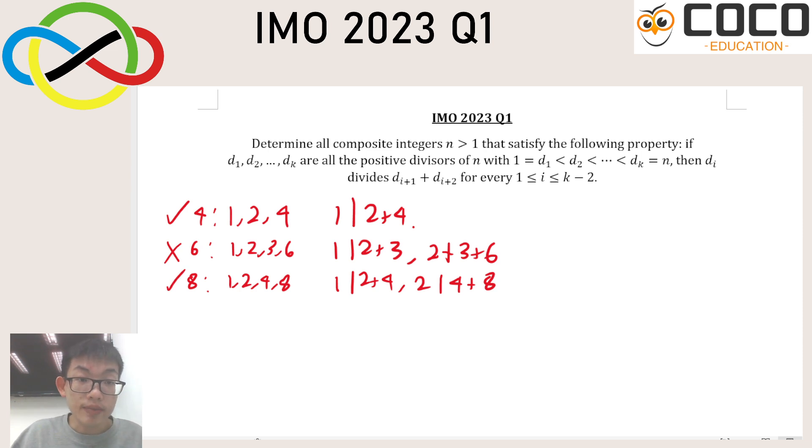And then the next composite number is 9, with factors 1, 3, and 9. Obviously, 1 is always going to be divisible, like, 1 is always going to be a factor of anything. So if we only have 1 at the start, we don't have to worry about it. And let's maybe write down 10 as well. So 10 does not work, because 2 does not divide 5 plus 10.